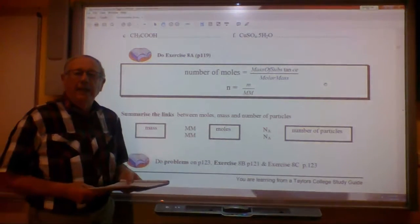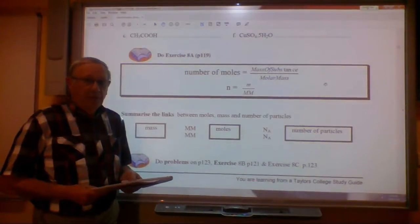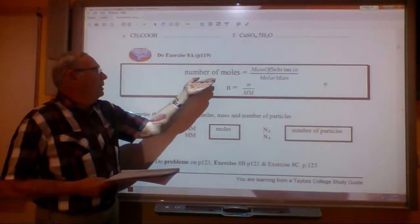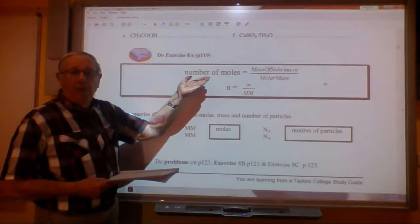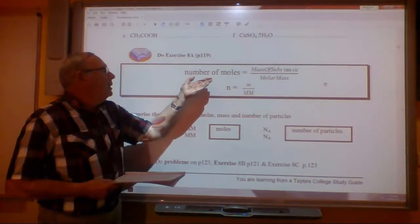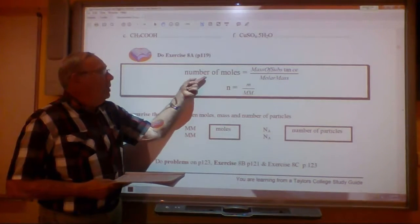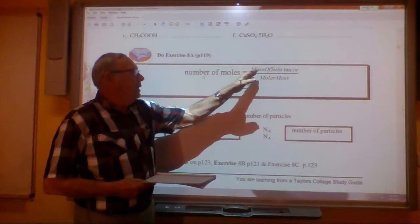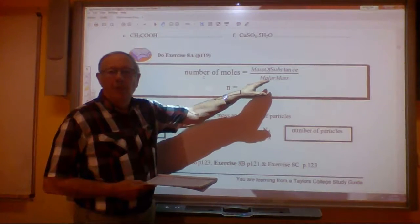Now, here we see a neat summary of some of the things that we've learned so far. First of all, this formula here, which is something that we need to learn by heart, that is that the number of moles of a substance is equal to the mass of the substance divided by the molar mass.